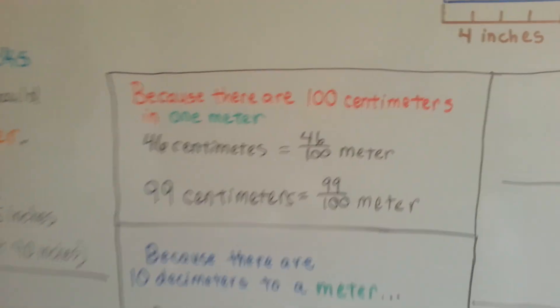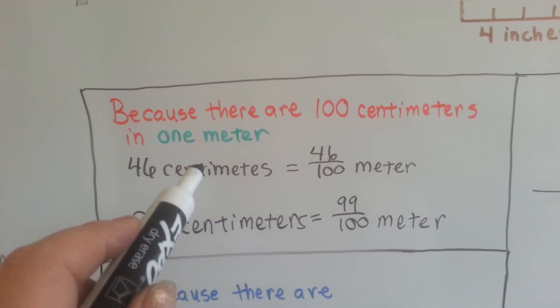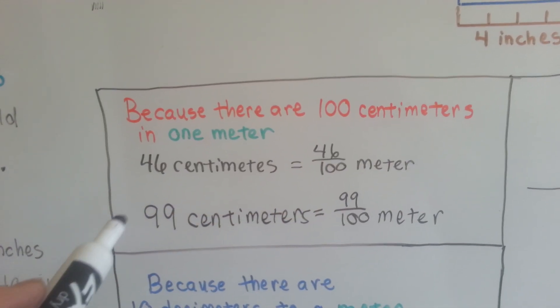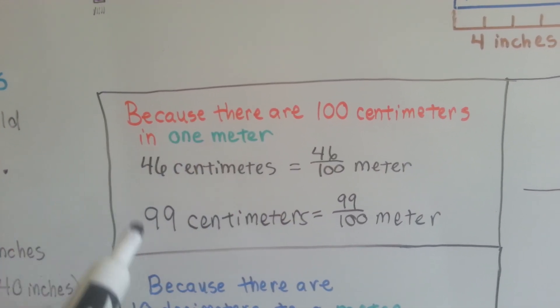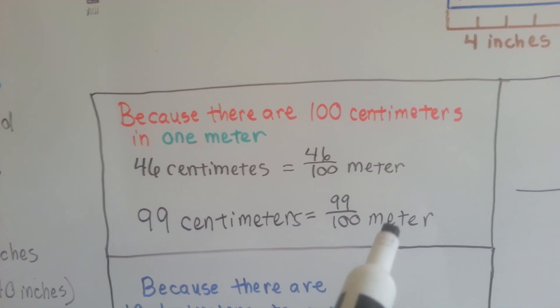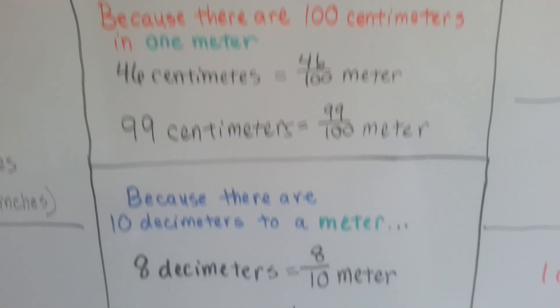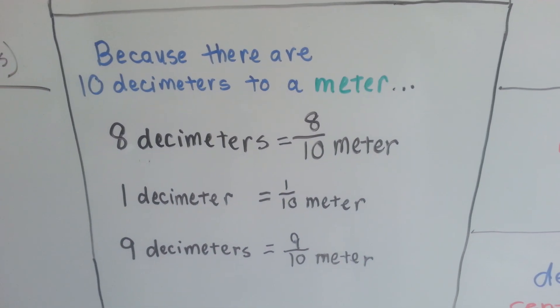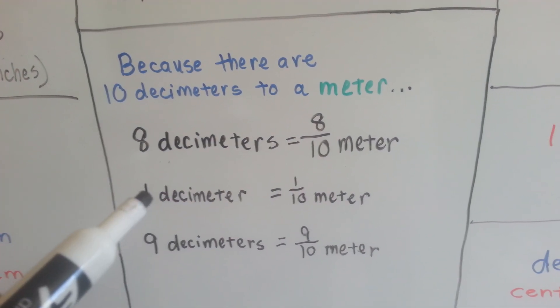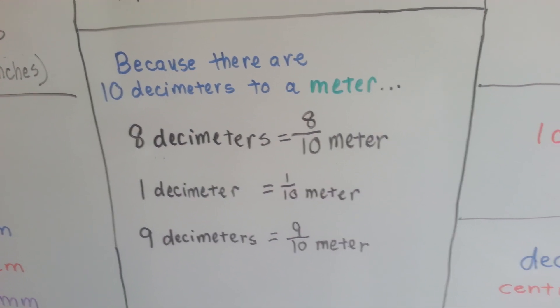Because there are a hundred centimeters in one meter, forty-six centimeters would be forty-six one-hundredths of a meter. Ninety-nine centimeters is ninety-nine one-hundredths of a meter. One more little centimeter and you would have a meter. Because there's ten decimeters to a meter, eight of them would be eight-tenths of a meter. One of them would be one-tenth of a meter, and nine of them would be nine-tenths.